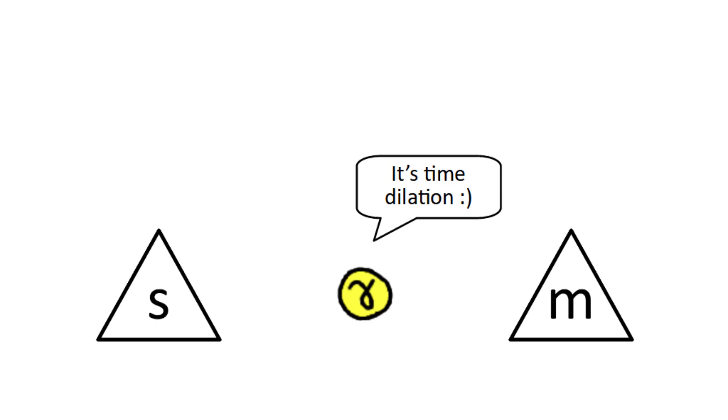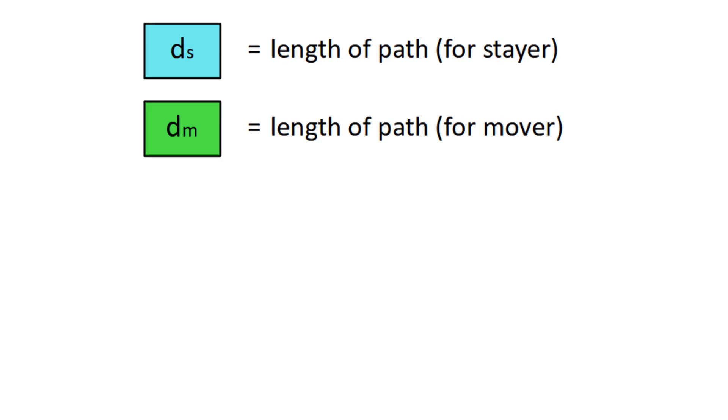dm is the length of the photon's path for the mover, and ds is the path's length for the stayer. Likewise,